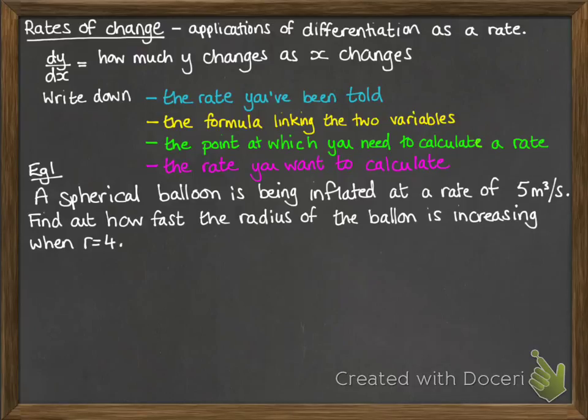So we have a spherical balloon. It's being inflated at a rate of 5 metres cubed per second. We want to find out how fast the radius of the balloon is increasing at the point when r equals 4, r being the radius. So the first thing, we want to write down the rate that we've been told. So that's right there.